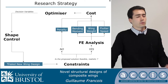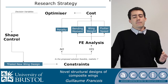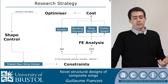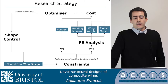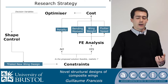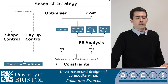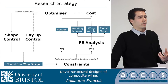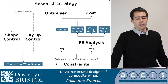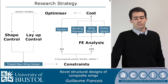Here is the research strategy. Since we're trying to find the best shape possible for ribs and spars, it was a clear optimization problem. We use an optimizer to generate a set of shapes for ribs and spars. Because this research is quite novel, we also included a layup control — a standard stacking sequence optimization — as a benchmark case, since stacking sequence optimization is more common in academic research.